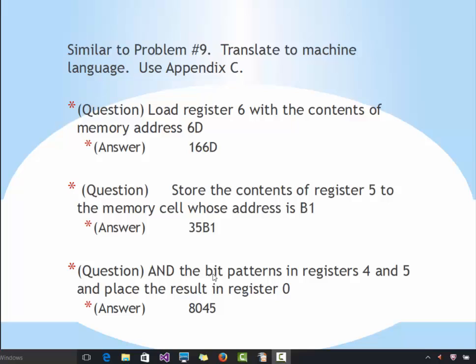The next instruction is to AND the bit patterns in registers 4 and 5. AND has opcode 8. It ANDs the bit patterns in registers S and T, placing the result in register R. In our case, S and T are 4 and 5, and R is 0, giving the instruction 8045. Again, if you have your Appendix C handy, you can do all of these problems without any issues. Email me if you have any questions.